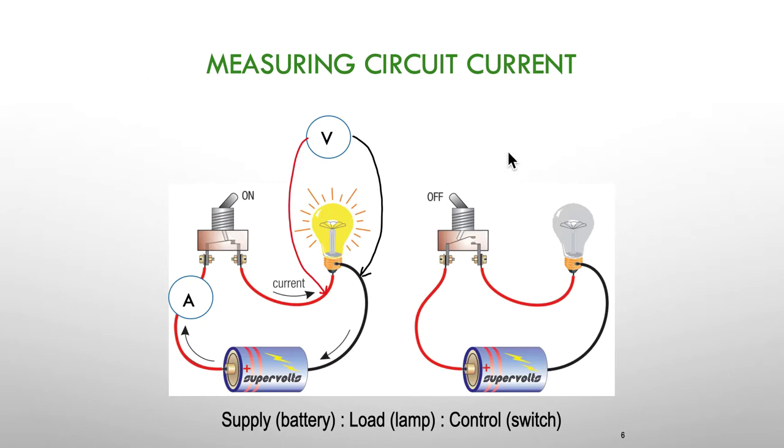So next we're going to measure the current. This time we're going to add in an ammeter, but this time we have to actually break into the circuit. So I've connected the ammeter between the battery supply and the switch. It doesn't matter where the ammeter goes in a simple circuit. I could have broken in here and it would work, or I could have broken in here and it would work. But I've chosen to break into the circuit between the battery and the switch.